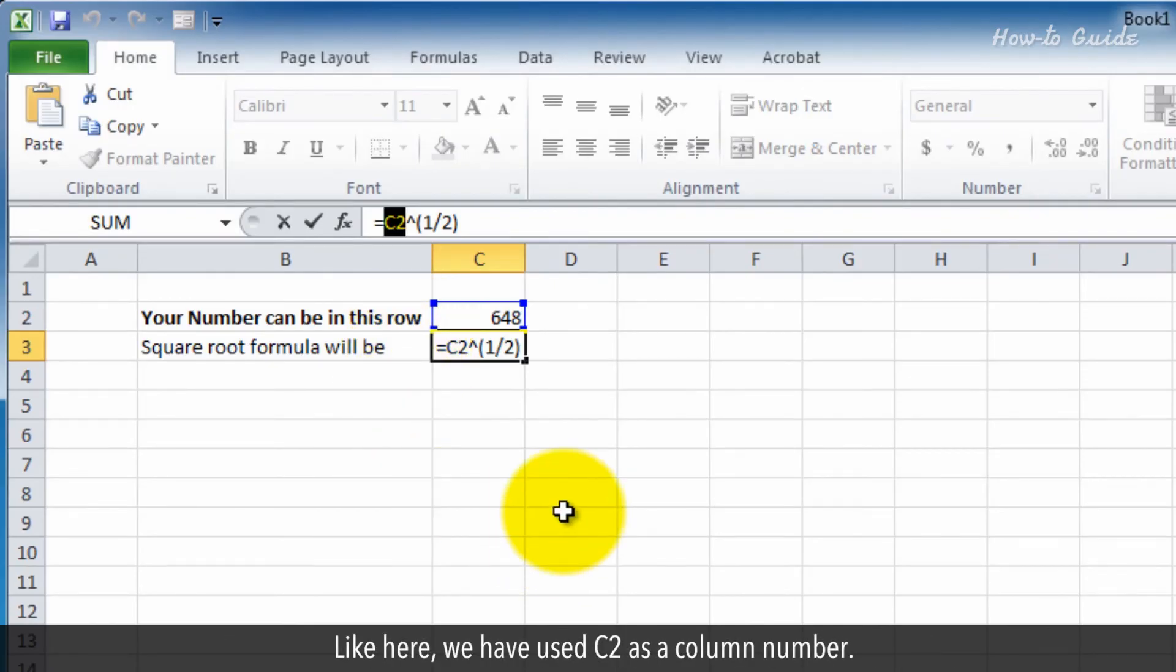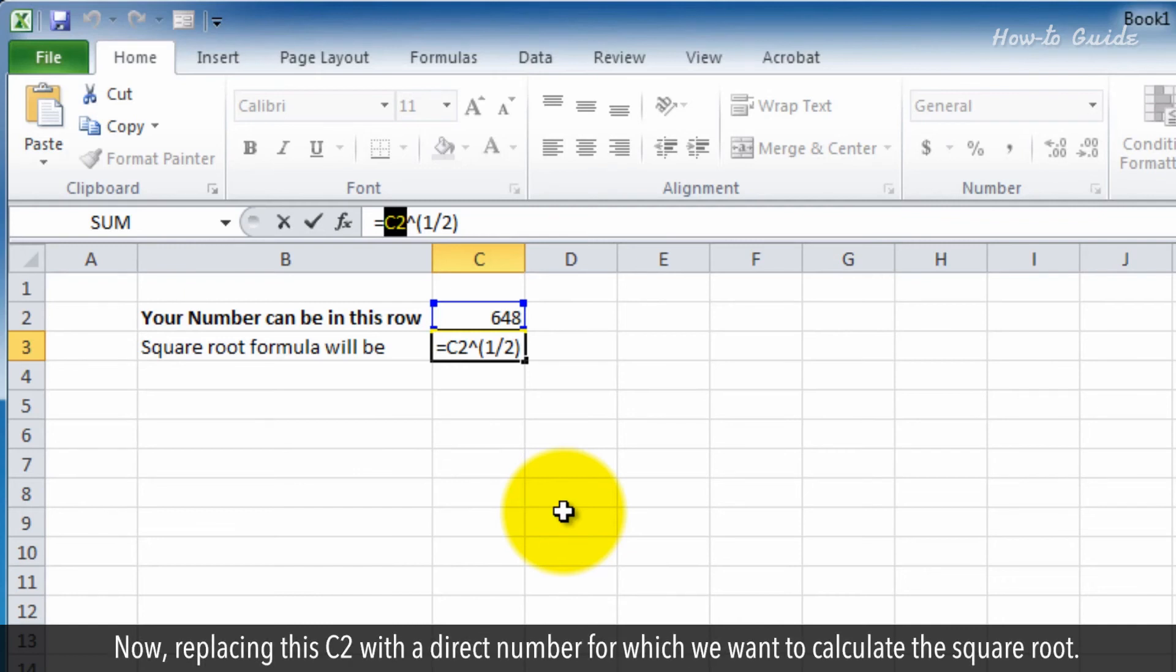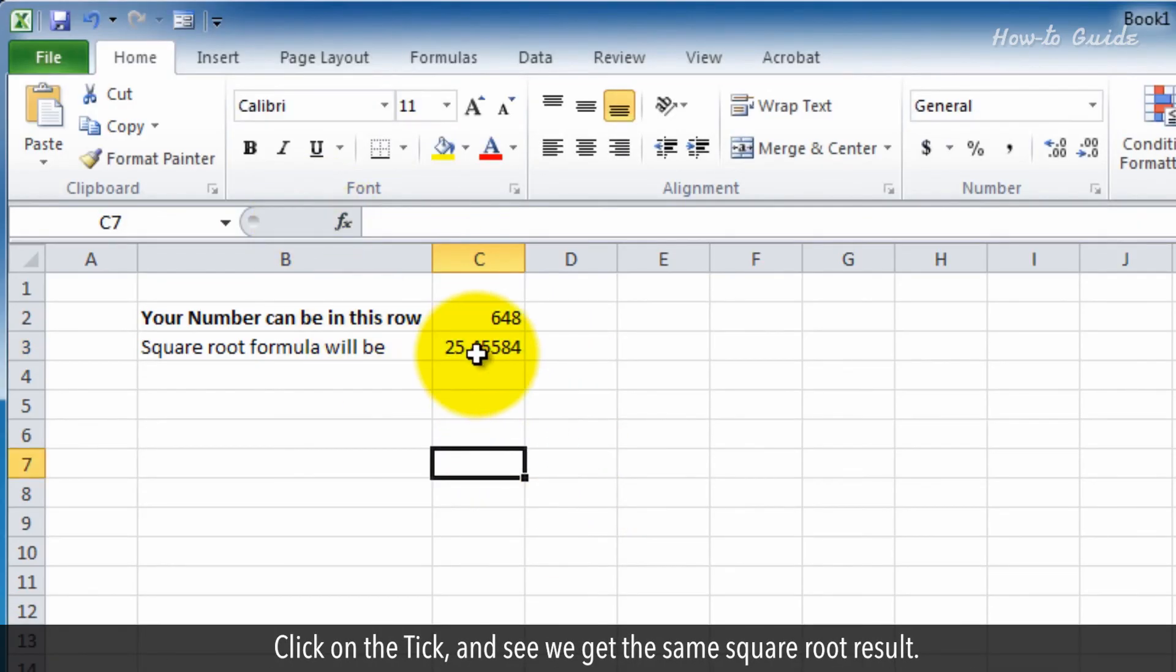Like here, we have used C2 as a column number. Now, replacing this C2 with a direct number for which we want to calculate the square root. Click on the tick and see, we get the same square root result.